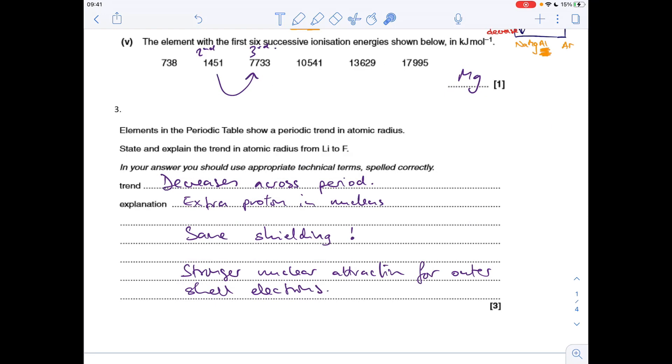Question three, I've already written the answer up there. So the trend in the atomic radius, lithium to fluorine, decreases across the period. That's the case for all periods. And that's down to the extra proton in the nucleus each time, but we've got the same shielding. Don't forget to say that, students often do. And therefore, there's a stronger nuclear attraction for the outer shell electrons, and that pulls the atomic radius in, makes it smaller.